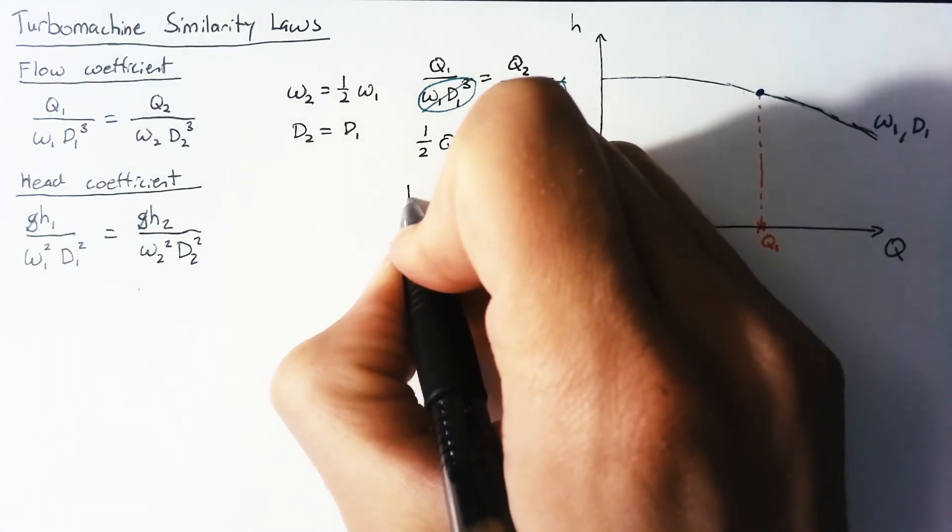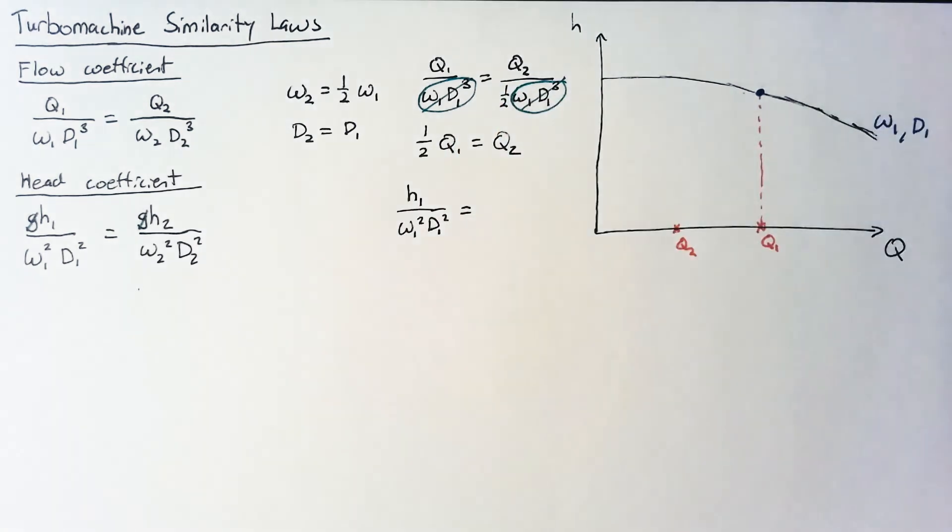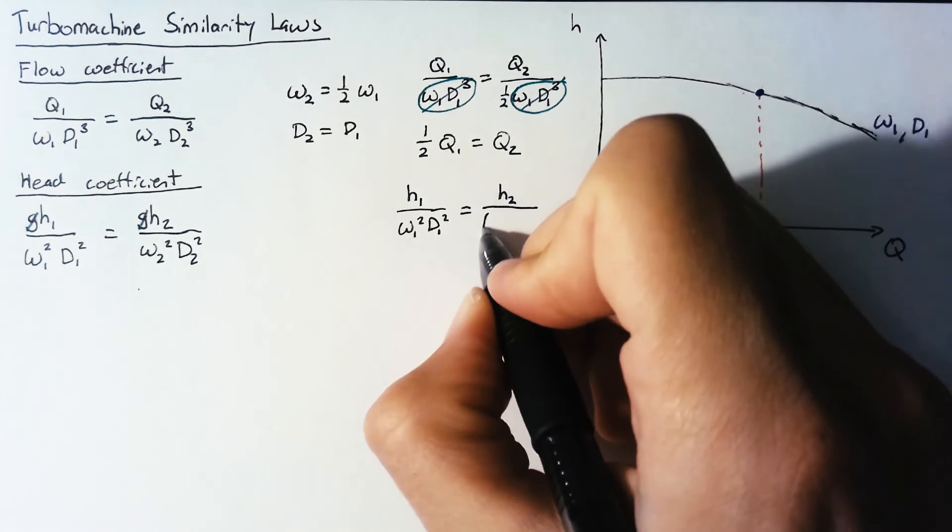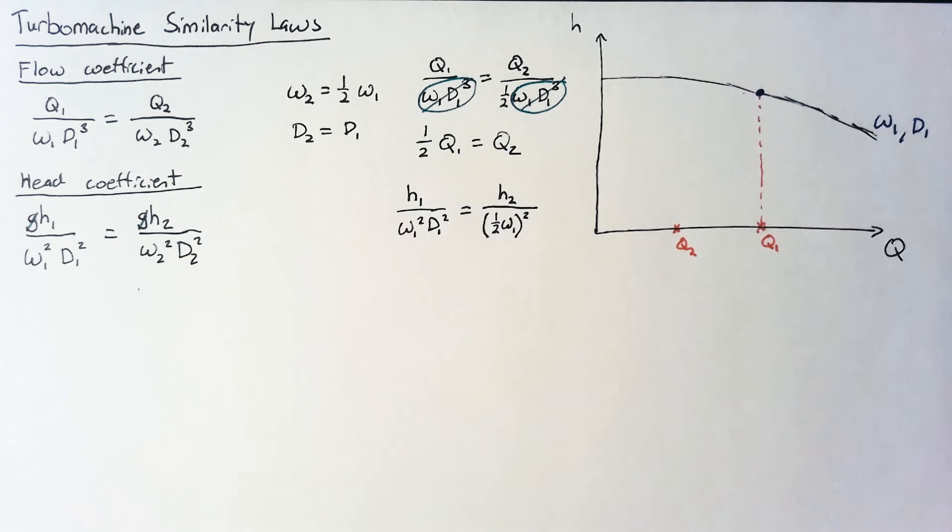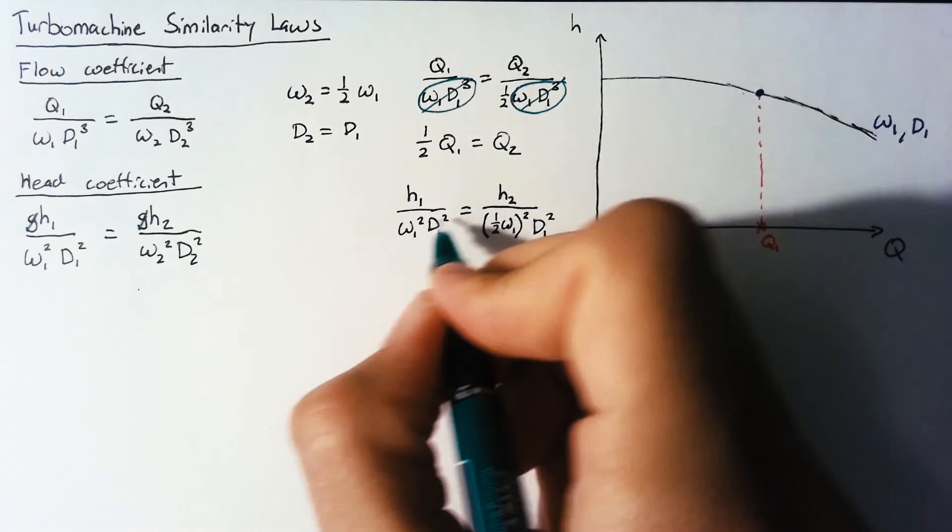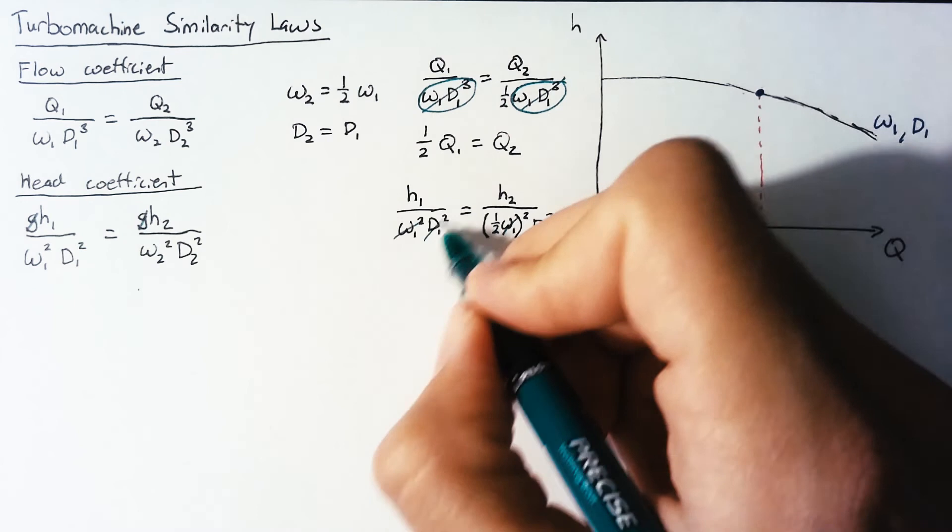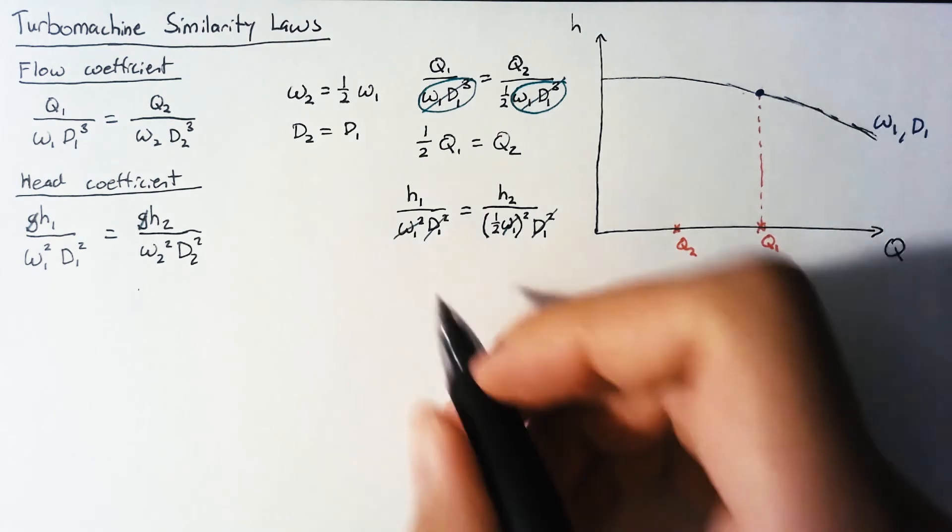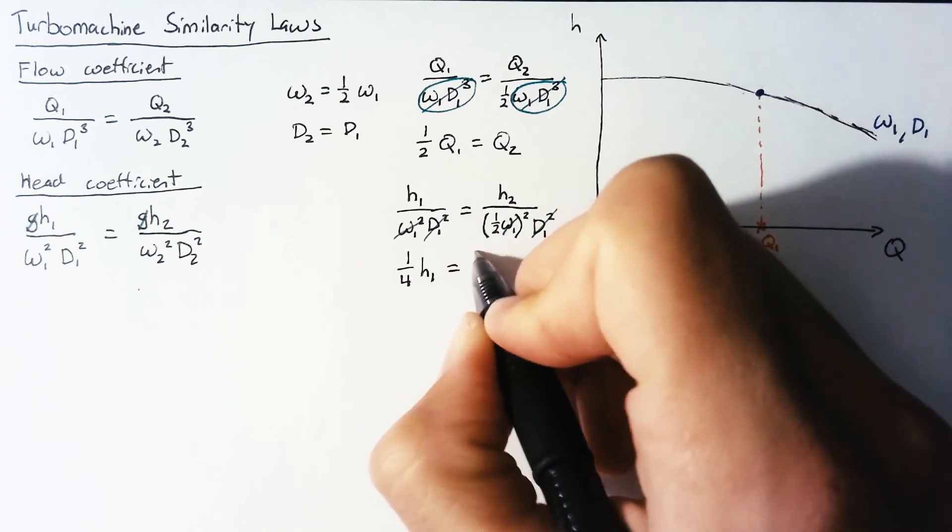Now let's do the same thing for the head coefficient. Again the left hand side is going to stay just as it is and then we need to replace everything for the right hand side. We're trying to find h2 and then we end up with one half omega 1 that entire thing squared multiplied by D1 squared which again isn't changing. So again this is going to go away with our omegas and then our D1s are going to go away as well.